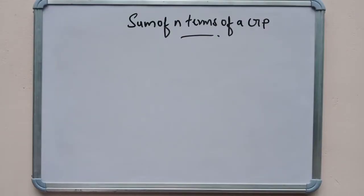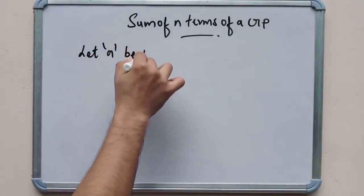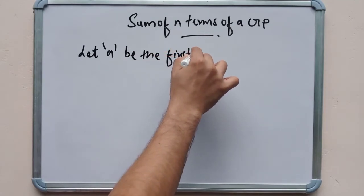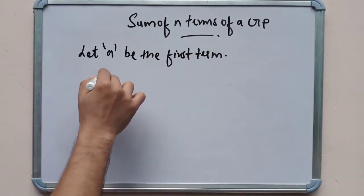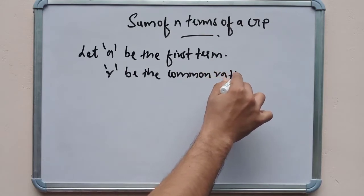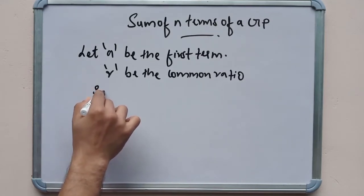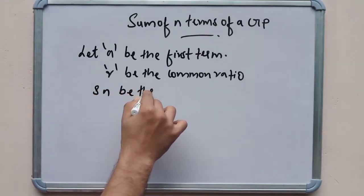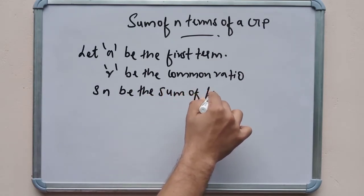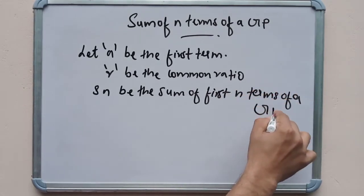Students, now we are going to find the sum of n terms of a GP. Let a be the first term, r be the common ratio, and Sn be the sum of first n terms of a geometric progression.